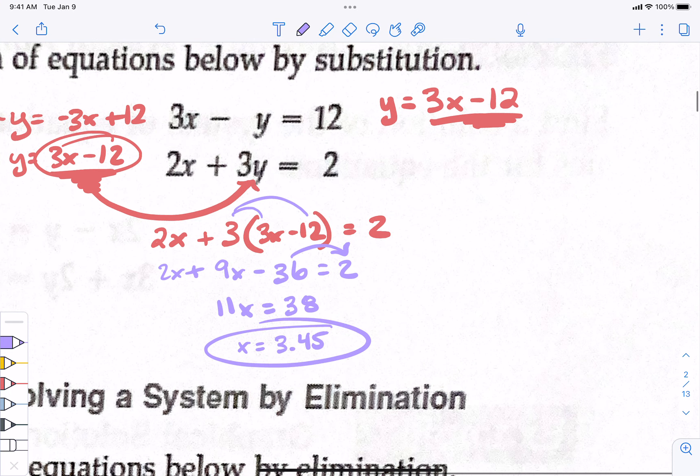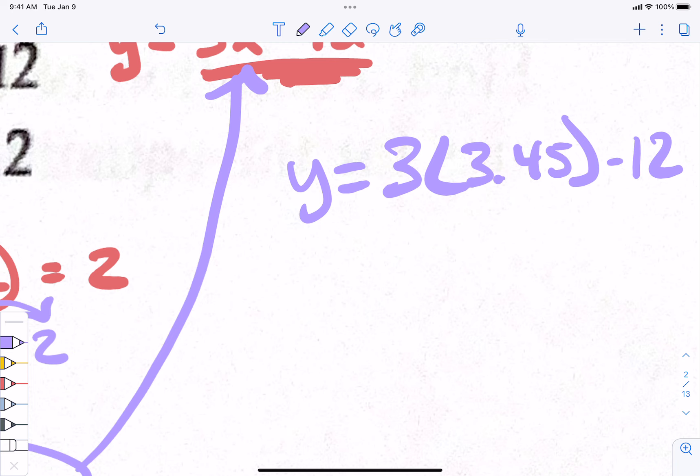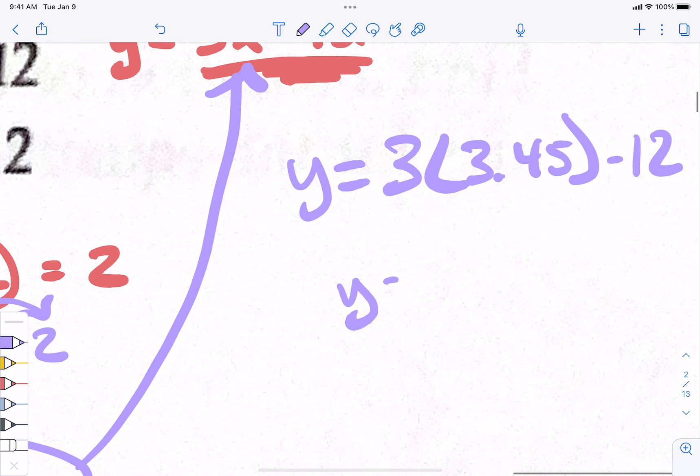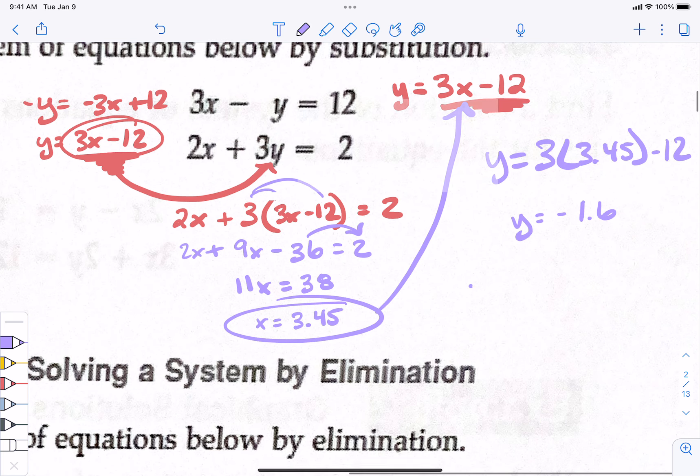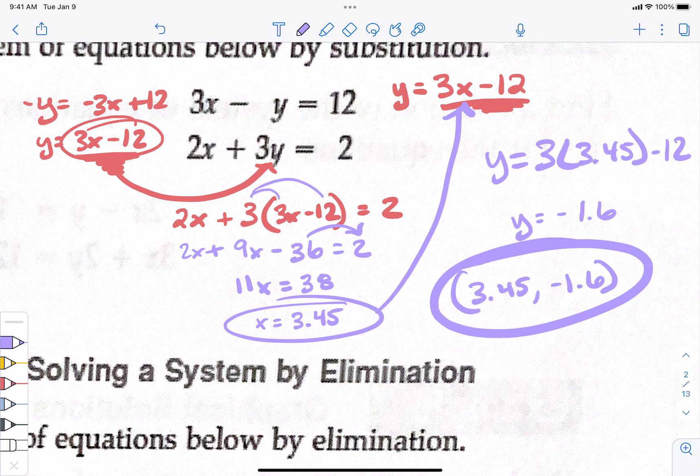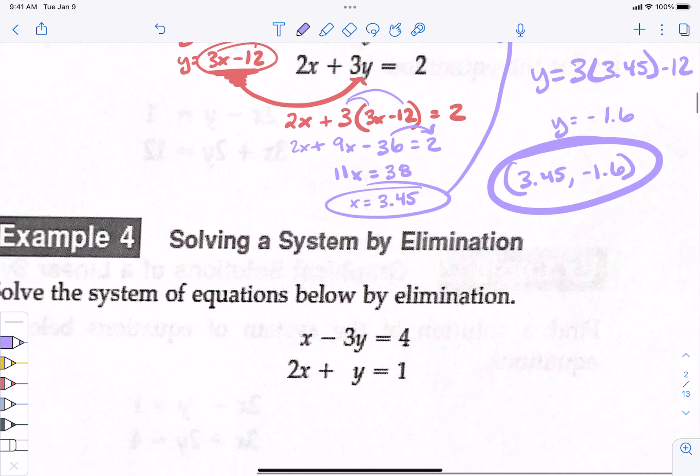And then we still have to solve for y. But we plug it back in. And I'm going to plug it in right here. Y equals 3 times 3.45 minus 12. What did you get? If you take that times 3 minus 12, what do you got for y? Negative 1.6. So, 3.45 comma negative 1.6. All right, why do I care about that? What happens there? Those two lines cross each other. Very nice.